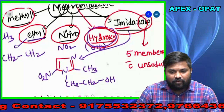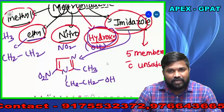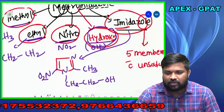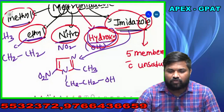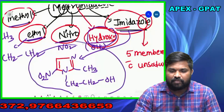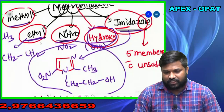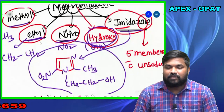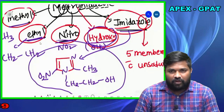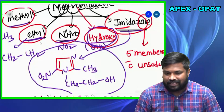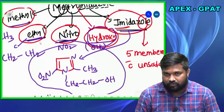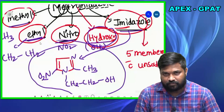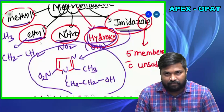Now clear everyone — what is metronidazole? Methyl, ethyl, nitro, hydroxy imidazole. So we got the metronidazole structure: methyl, ethyl, hydroxy, nitro imidazole — that is the metronidazole, used for the treatment of GIT infections.